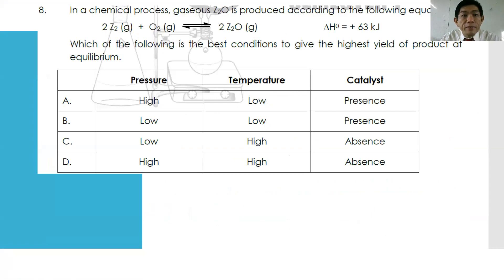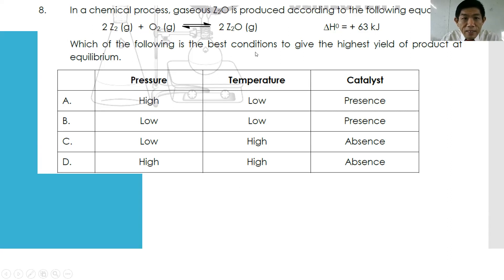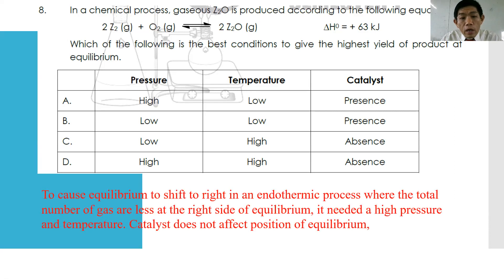For number eight: gaseous Z₂O is produced according to 2Z₂ + O₂ → 2Z₂O, ΔH = +63 kJ. Which conditions give the highest yield of product at equilibrium? Since the forward reaction is endothermic and the right side has fewer total moles of gas, you need high pressure and high temperature. Catalyst does not matter since you want the highest yield. The best answer is D.